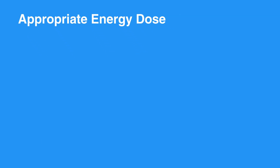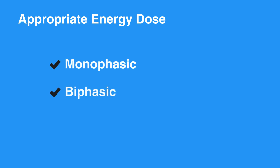The appropriate energy dose is determined by the design of the defibrillator — monophasic or biphasic. If you are using a monophasic defibrillator, give a single 360 J shock. Use the same energy dose on subsequent shocks.